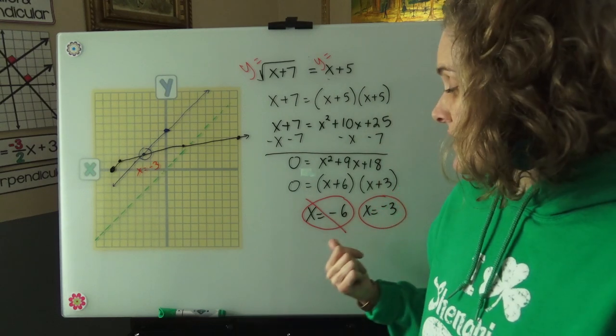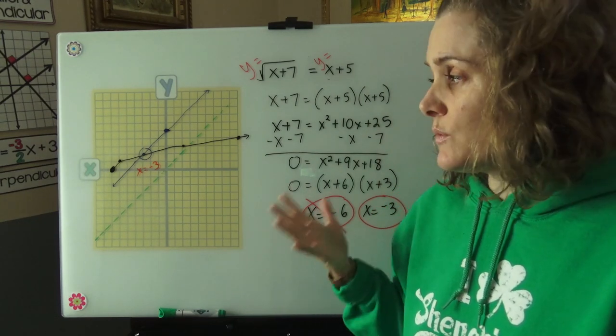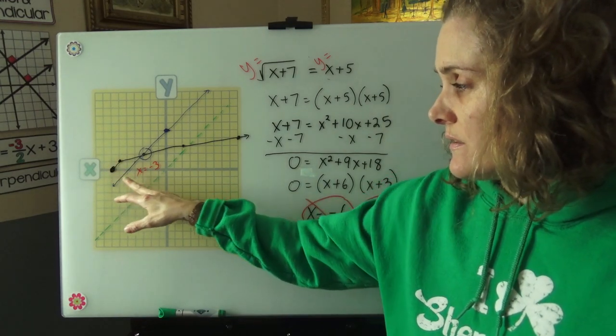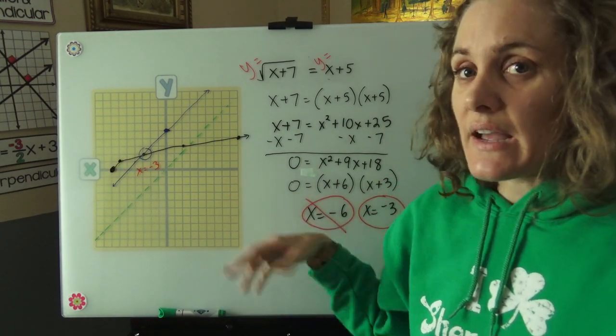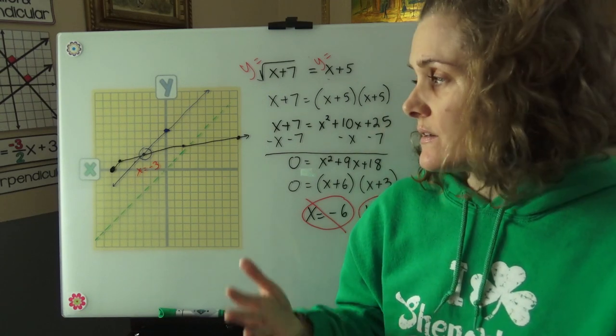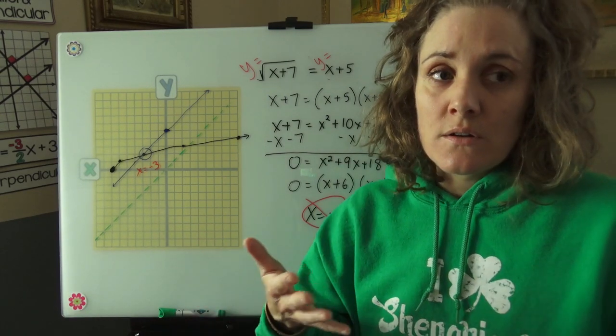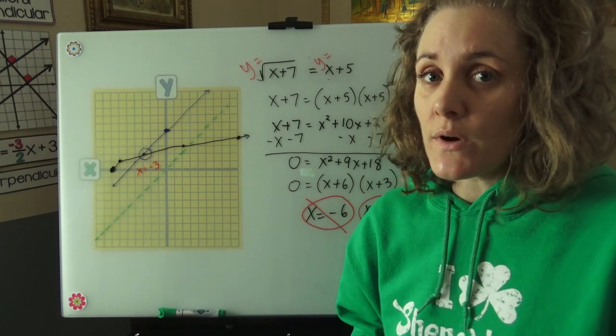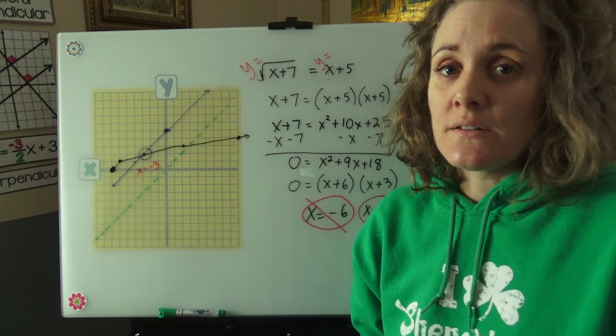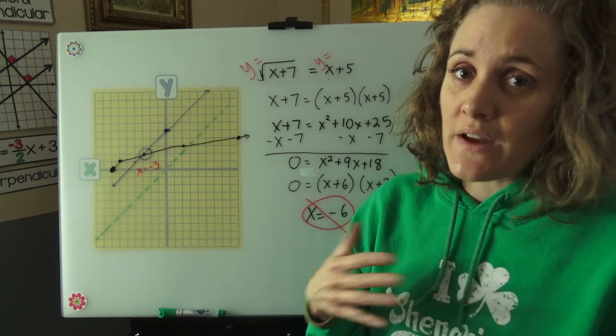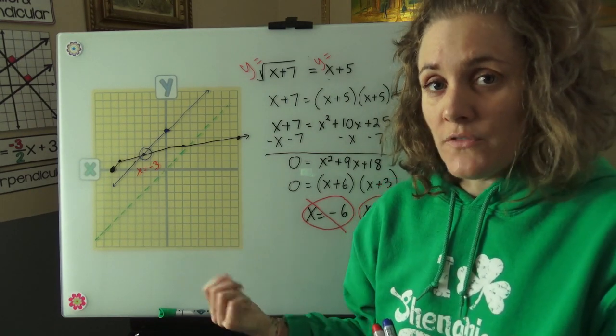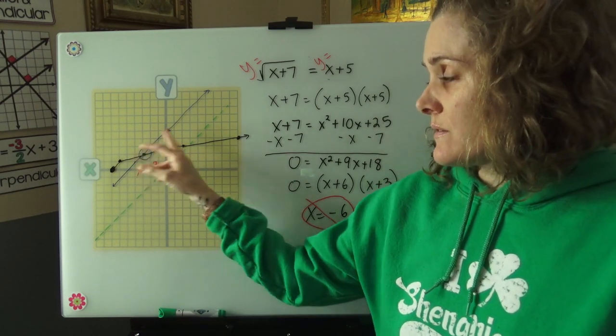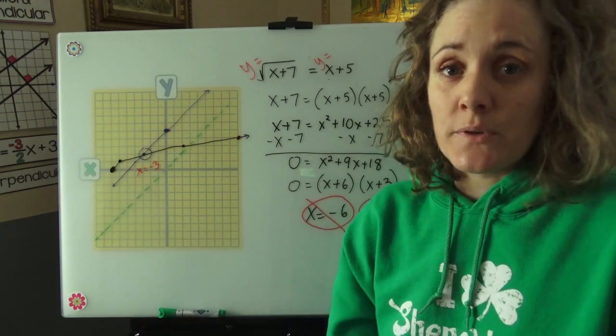So now what about this negative 6? It was our extraneous solution. Well, let's use our pattern to complete our radical as if it were a sideways parabola. Because we have to remember that radicals are parabolas' inverses. So if this was a true inverse 1 to 1 we would have a parabola on its side. Now that wouldn't make a function which is why we have to restrict the domain when we find its inverse. But if we did have a parabola on its side let's see where that would hit our x plus 5 graph.